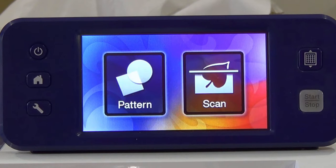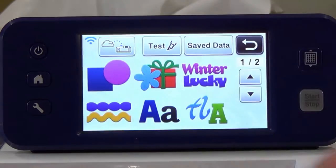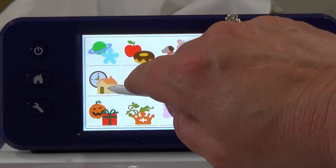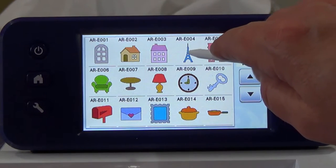The first part of this lesson will begin at the Scan and Cut. We first need to select a pattern. Press Pattern. Choose the category with the flower and the package. Choose the subcategory of the house and the clock. Select the Eiffel Tower pattern.